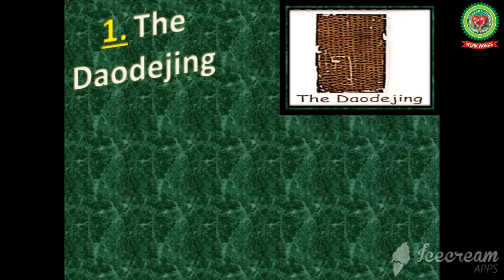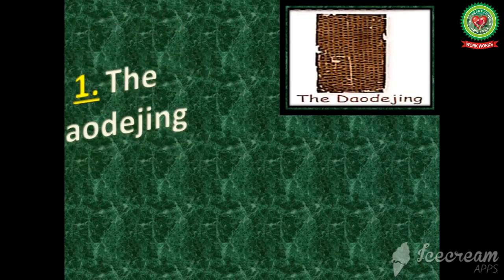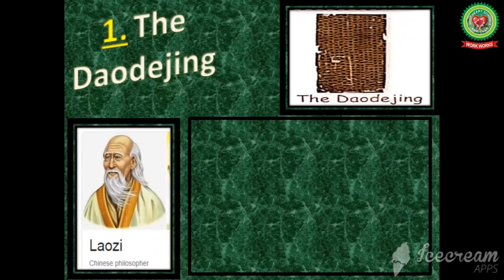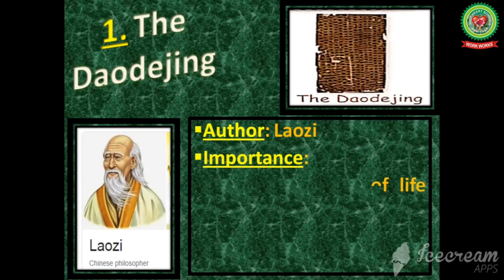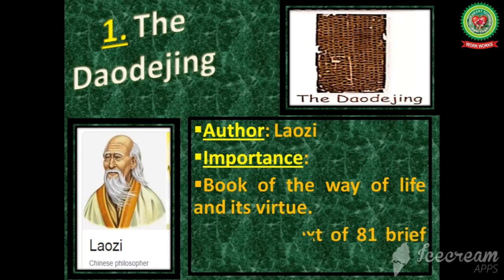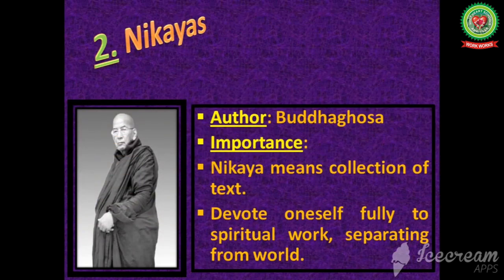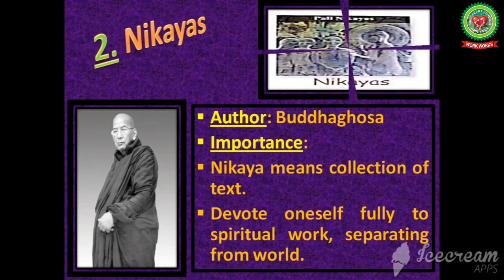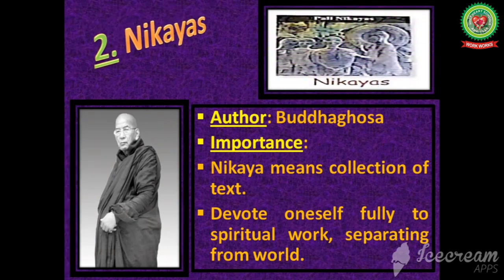Now I am going to teach you the other famous collections of fables. The first one is the Tao Te Ching. It is written by Laozi. It is a book of the way of life and its virtue. It is a religious text of 81 brief chapters.